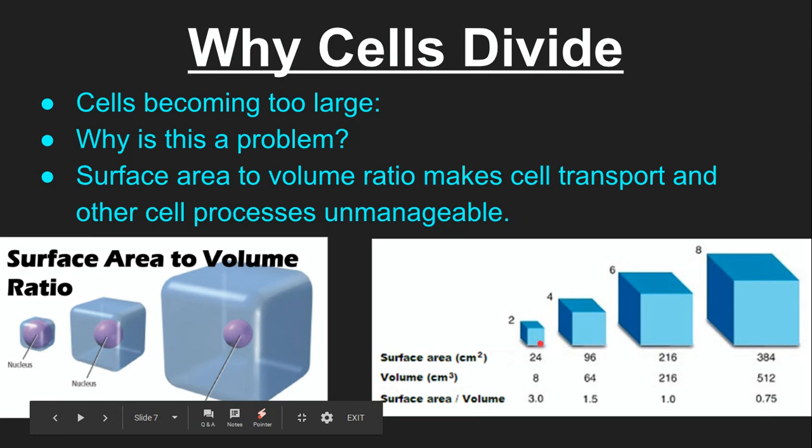If we have our small cube that has a unit of two on every side, the surface area is 24, the volume is 8. So our surface area to volume ratio would give us a 3 if you just divide surface area by volume.